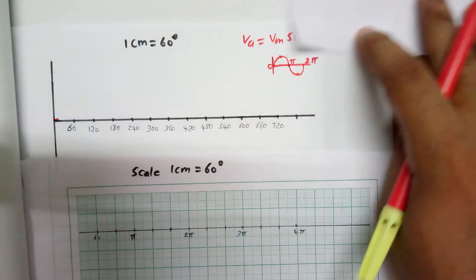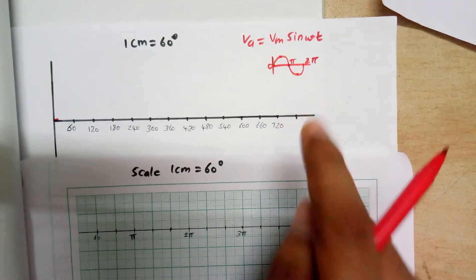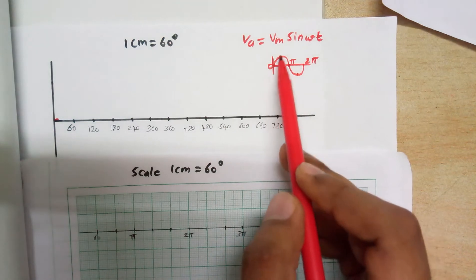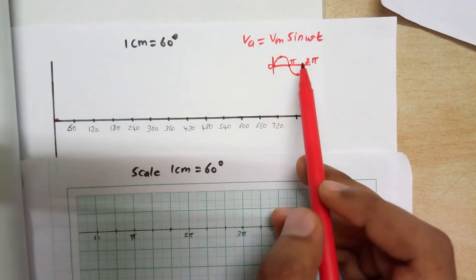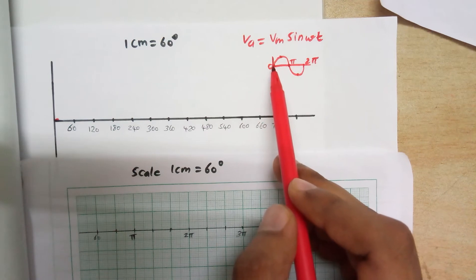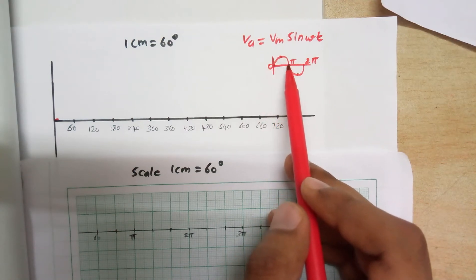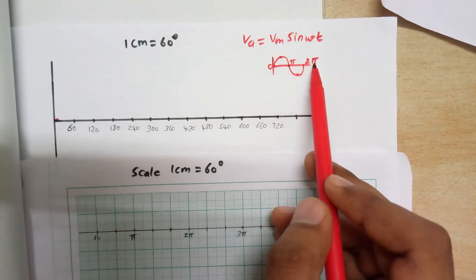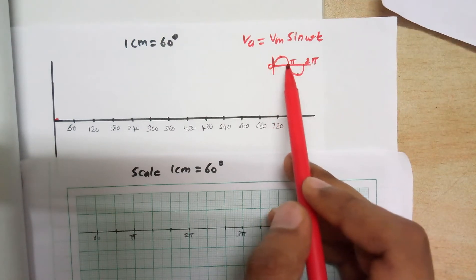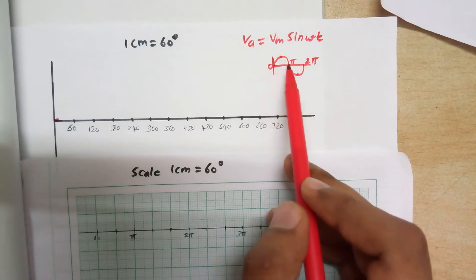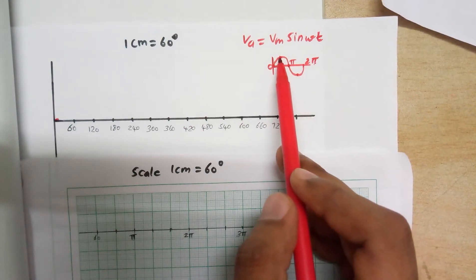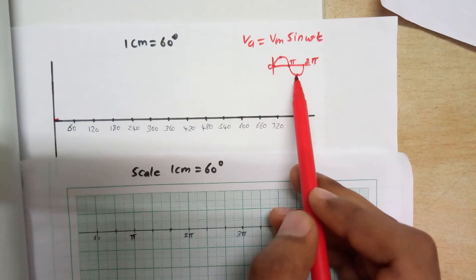Va equals Vm sin omega t. This is an example of an AC wave: Vm sin omega t. It will have a starting point at 0 degrees. The top part will end at pi, and the bottom part will end at 2 pi. Both the top part and bottom part have peak points — between 0 to pi there is a peak point, and between pi to 2 pi there is a peak point.